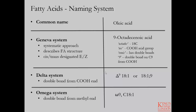So the naming conventions are as follows. You have your common name — in this case we're going to use oleic acid as the example, the common name being oleic acid. The Geneva system or the IUPAC system is the chemical or proper chemistry name for the particular fatty acid you're referring to. For oleic acid it's octadecanoic acid, and here you can see what each portion of that name refers to. Then you have the delta or the omega system of naming the double bond structures.